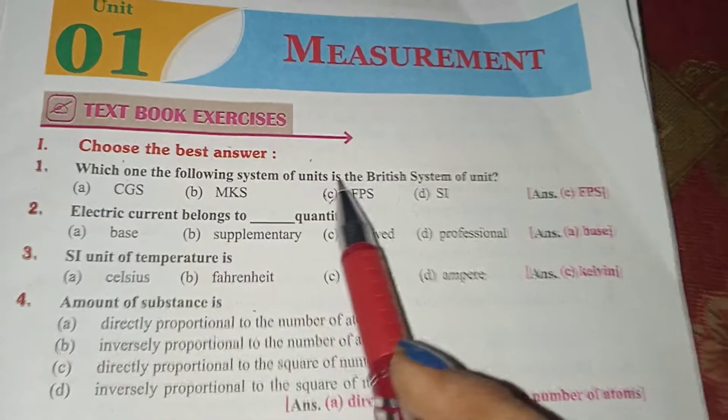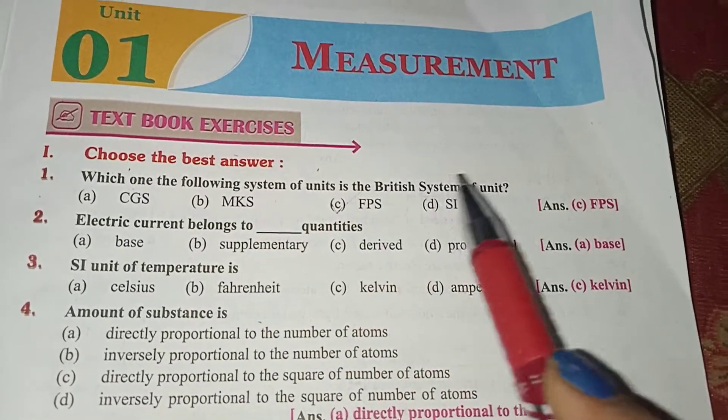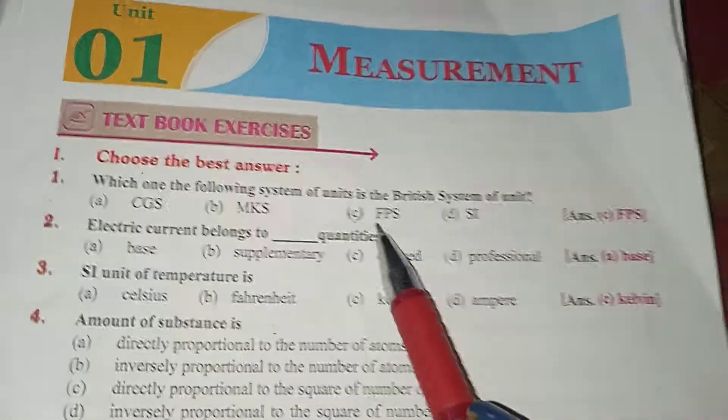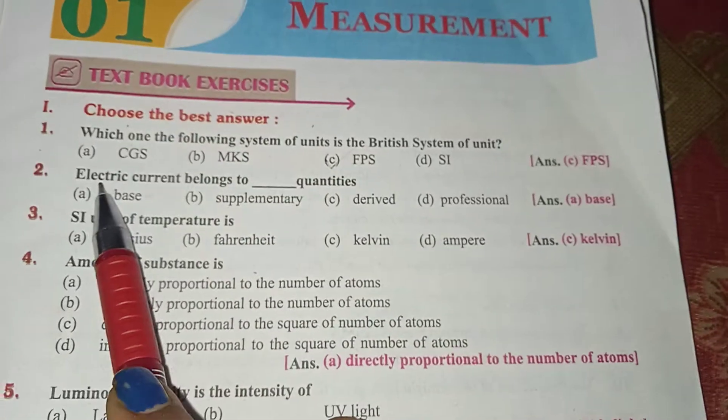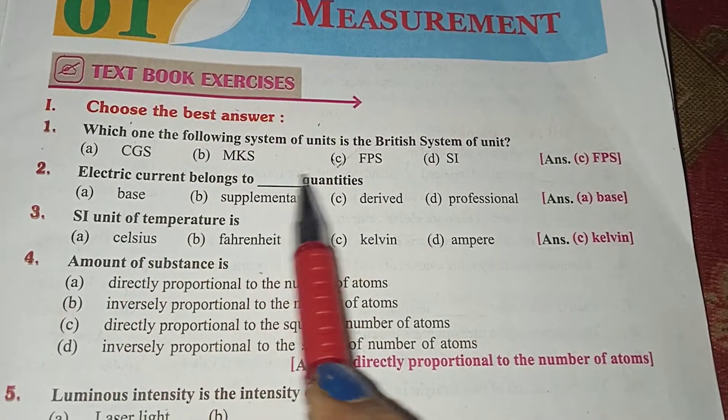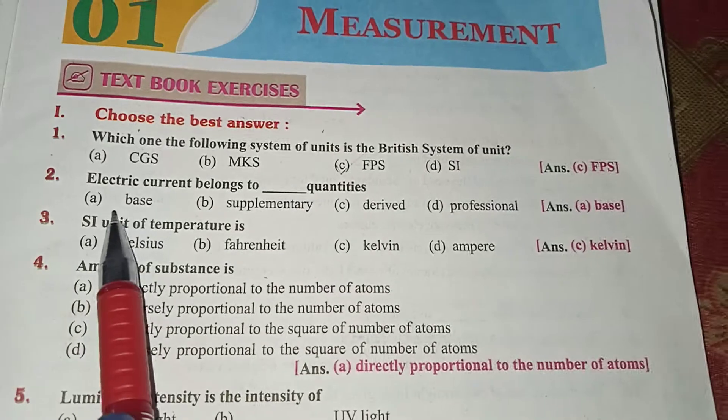Which one of the following system of units is the British system of unit? That's the answer. Electric current belongs to base quantities.